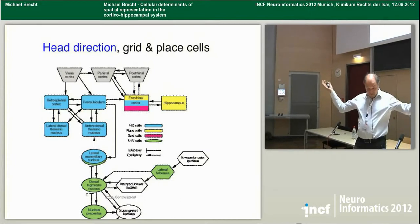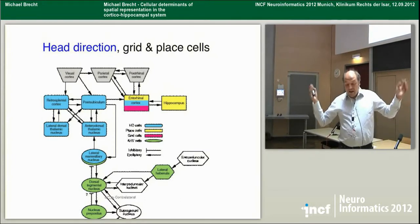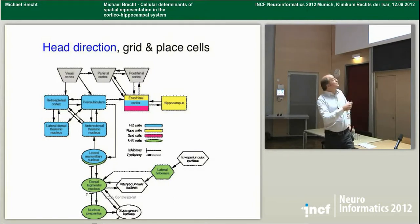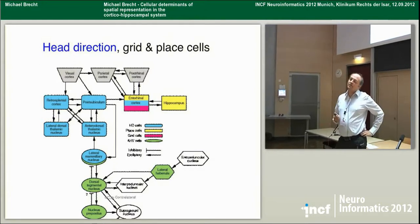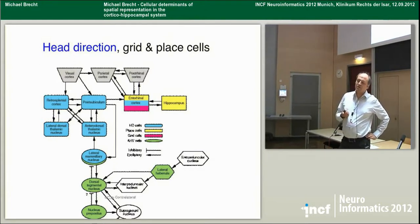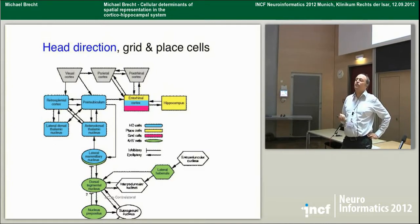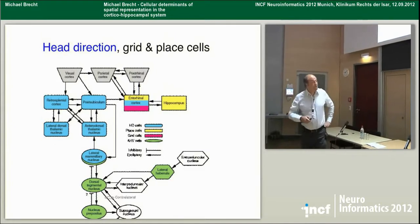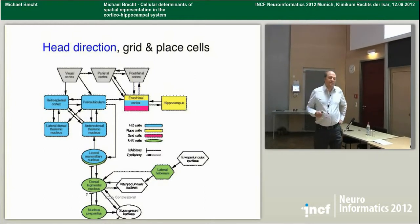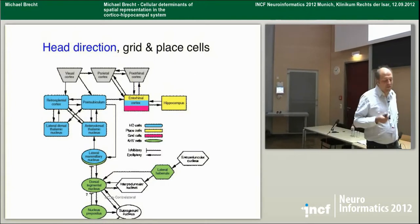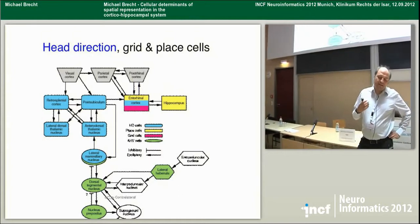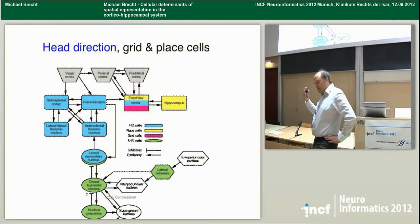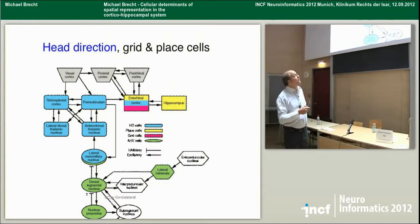When people discovered head direction cells, it became actually difficult to think that the animal is not using a map. The first there were these correlates — the place cells — but when you find things that look like a compass, that's what these cells do, it would be surprising if the animal would not be using map-like navigation. Grid cells, I think, did another job — there was a debate started off by the discovery of O'Keefe.